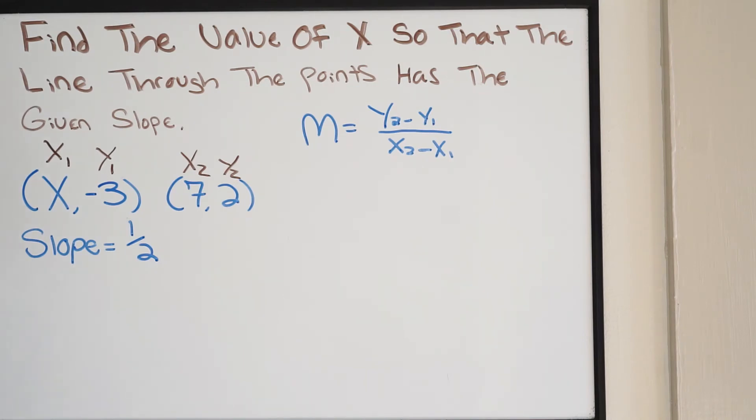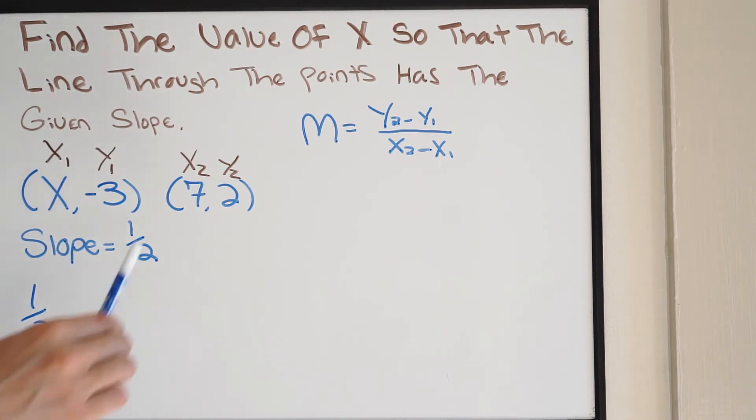So all we have to do now is plug this into our equation. We know the slope that's represented by m. Our slope is a half. So I'm going to go ahead and start plugging this in. So we have a half equal to, so what is y2? Well, what do we have here? It's going to be 2. So I put 2.